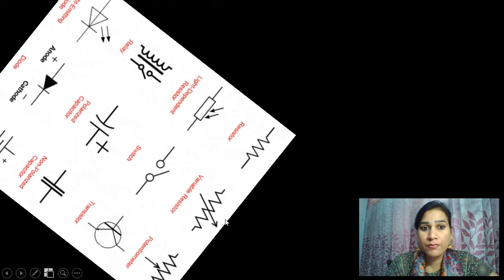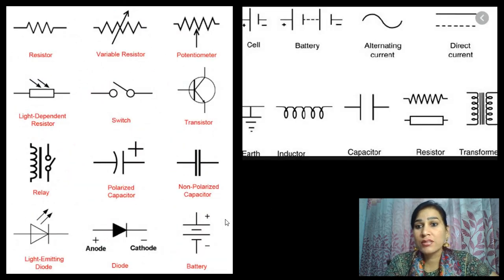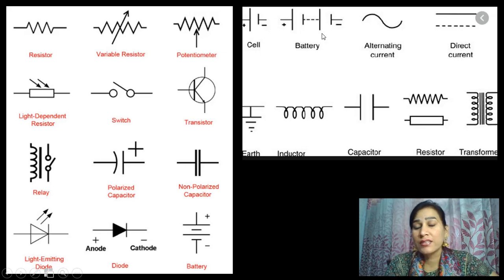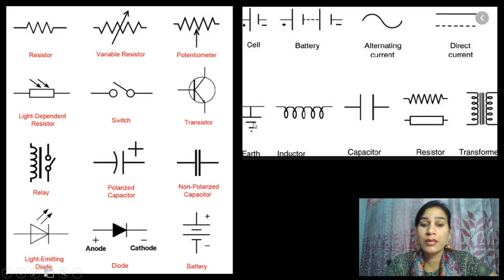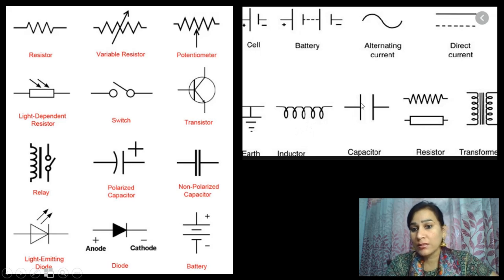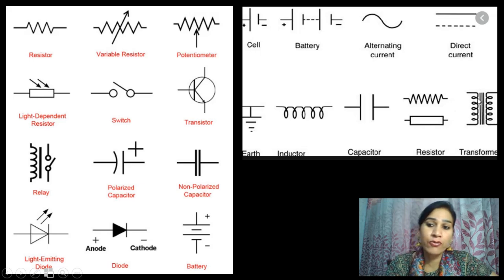Then we are having some more examples. This is the simple cell — only one cell. This is battery. This is alternating current, also called sinusoidal. This is direct current — a straight line. This is earth — when we are having such a symbol, it means that the circuit is earthed. This is a symbol for inductor, also called coils. This is the capacitor, and the symbol for resistance, and symbol for transformer. Keep all these symbols in your mind when we are doing circuit designing.